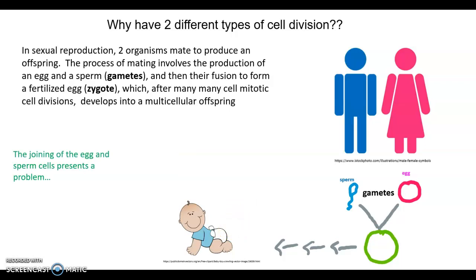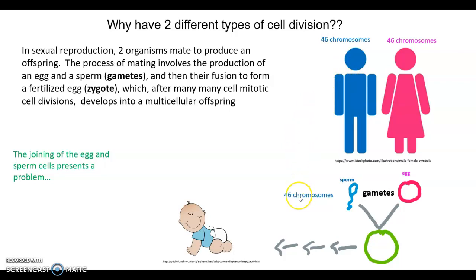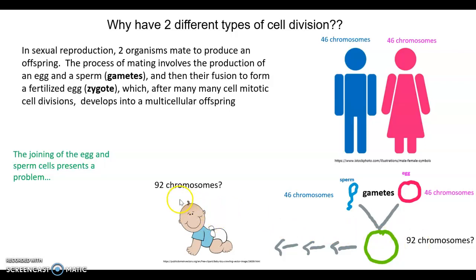But the joining of the egg and sperm presents a problem in terms of chromosome number. Adult humans have 46 chromosomes, so both the sperm-producing and egg-producing individuals each have 46 chromosomes. If sperm and eggs were produced by mitosis, they would also have 46 chromosomes each. When the egg and sperm fertilize to form the zygote, it would have 92 chromosomes — and every subsequent generation would double in chromosome number. Clearly, this isn't how it happens.